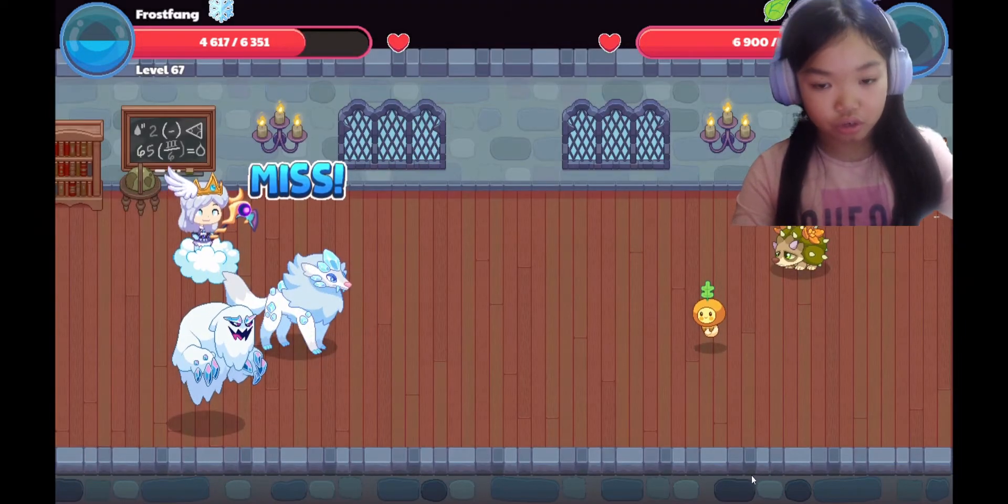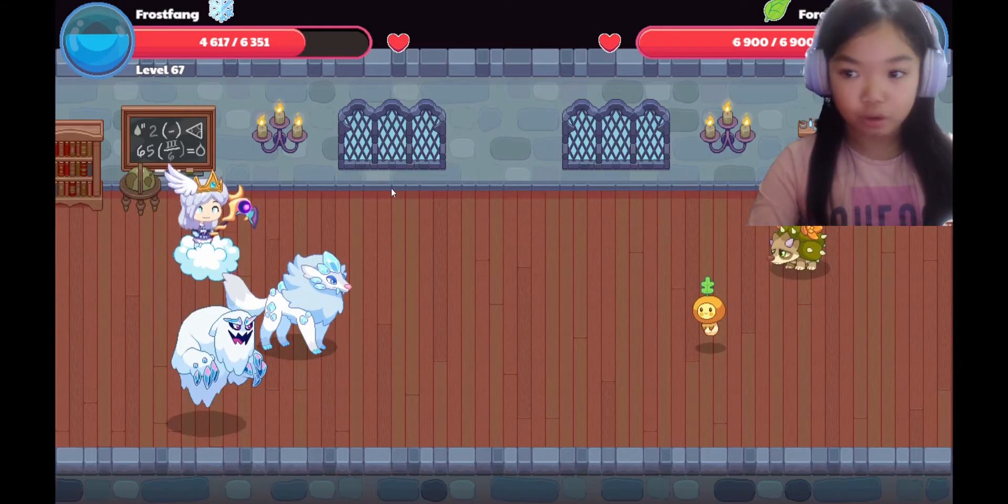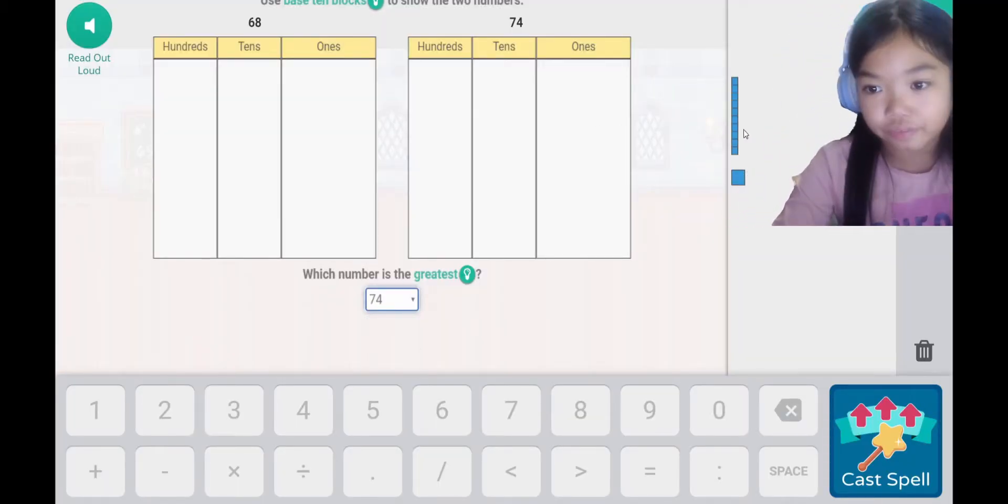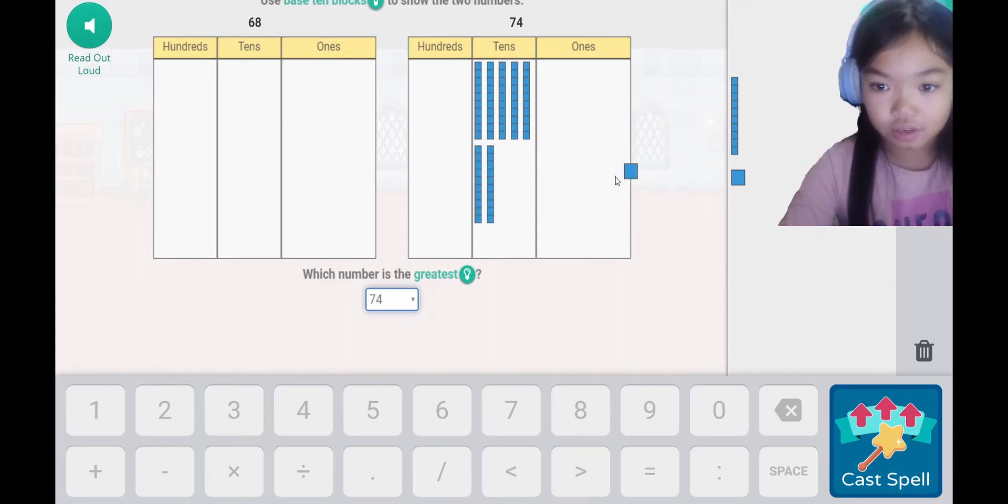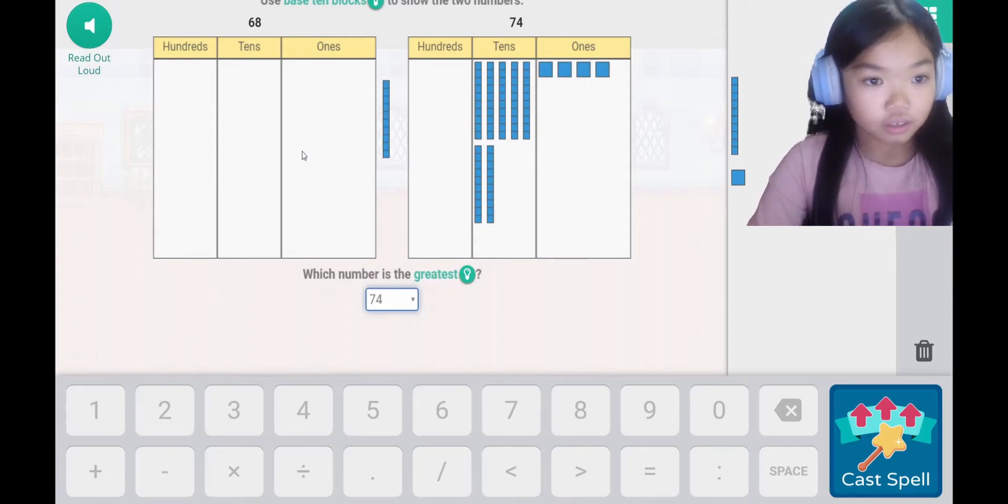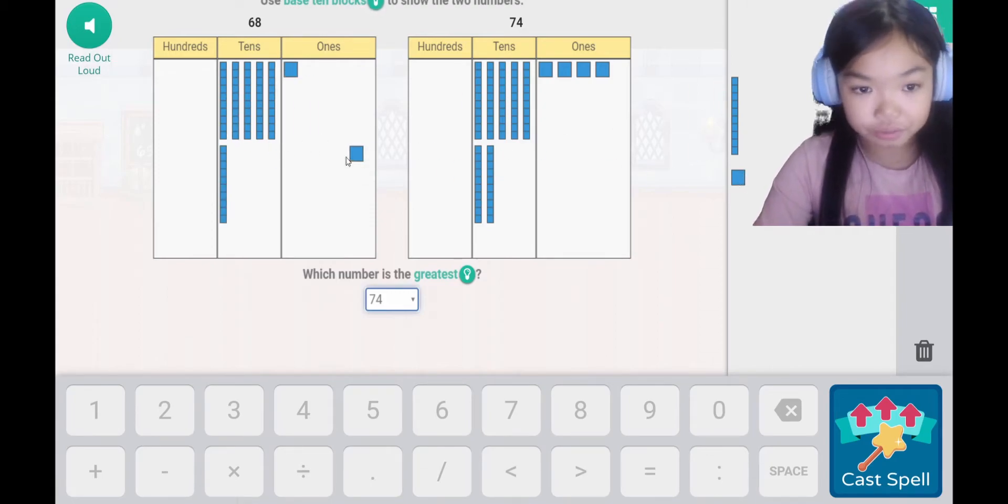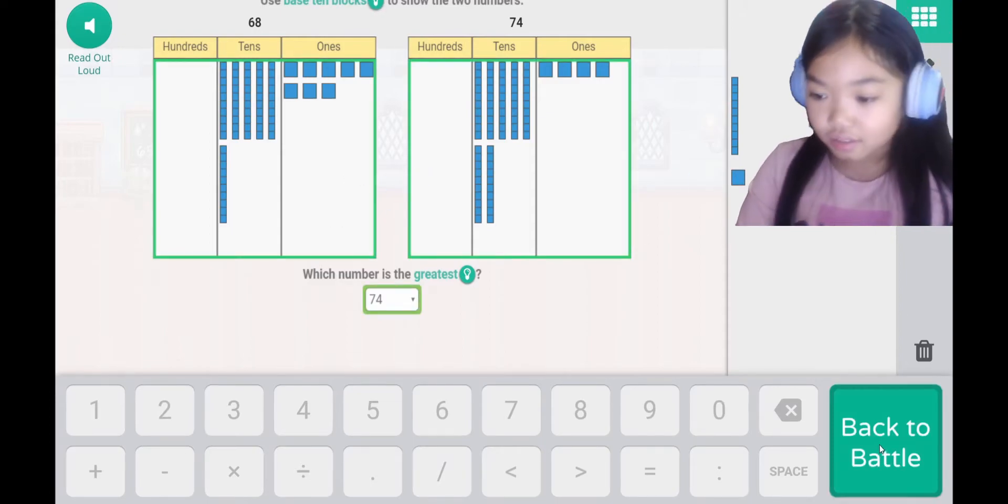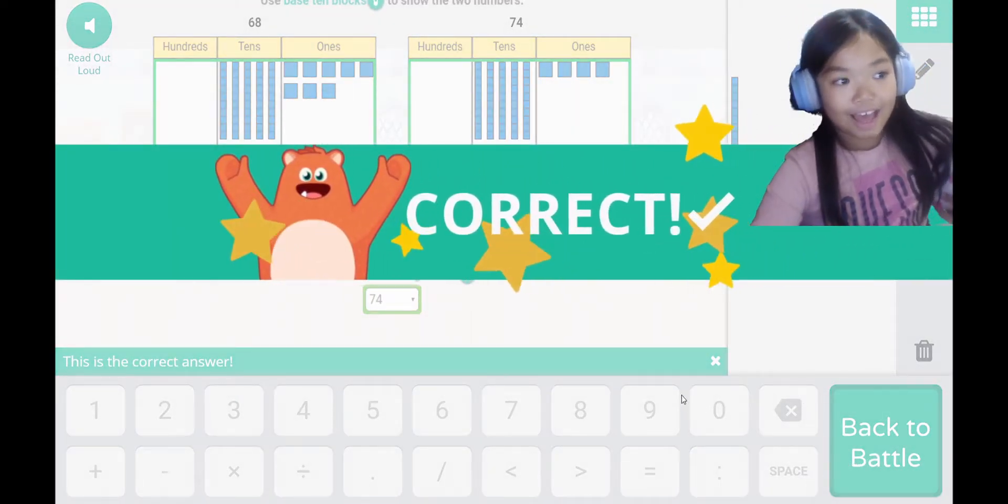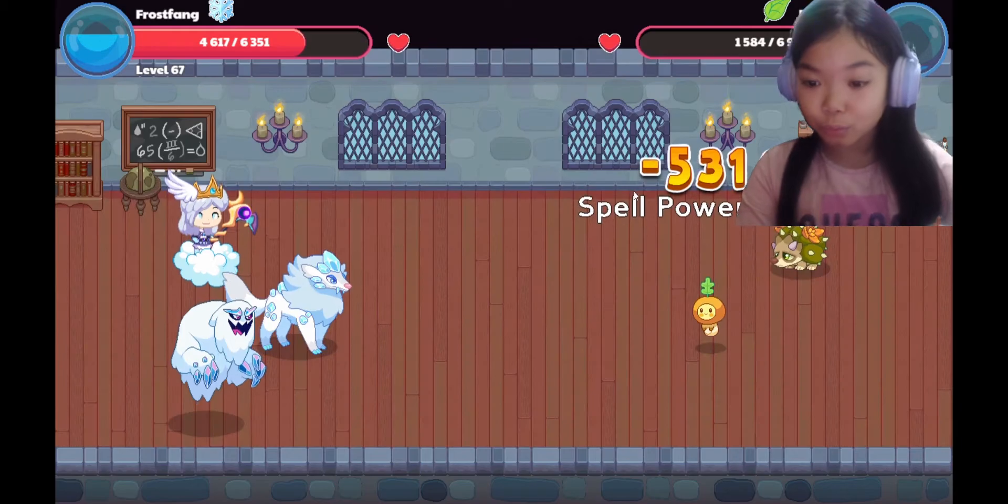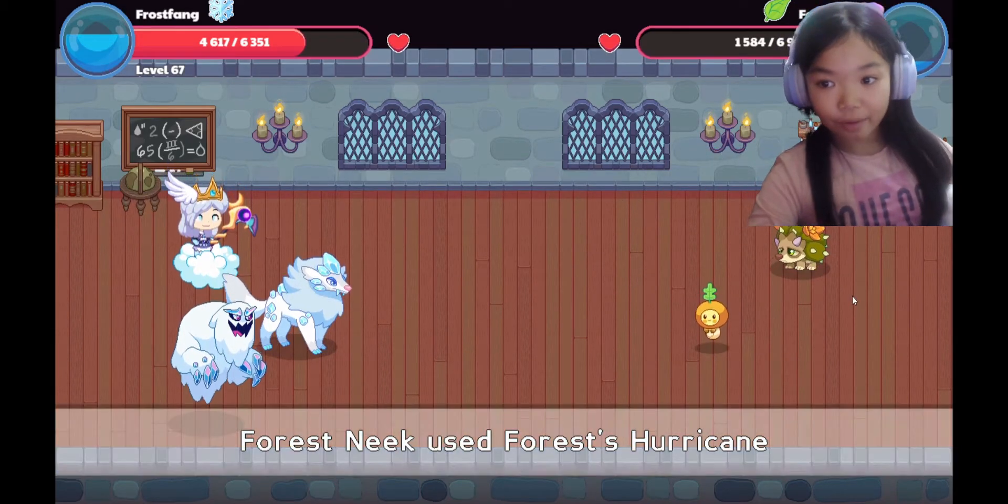Snowball. Use base 10 blocks to show the two numbers, 68 and 74. Which one is the greatest? 74. So let's start with 74. I have 1, 2, 10s, 3, 4, 5, 6, 7, 9, 10s. That was a lot.